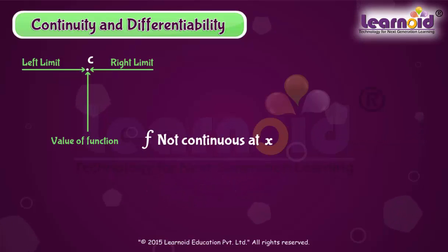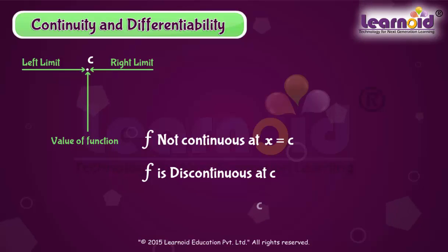If function f is not continuous at x is equal to c, then we say f is discontinuous at c and c is a point of discontinuity of f.